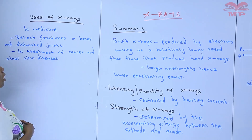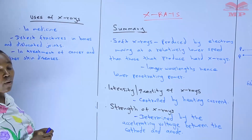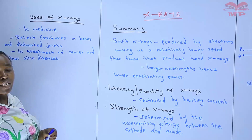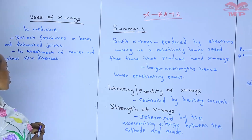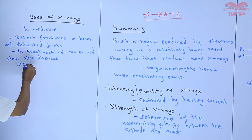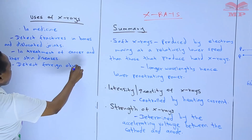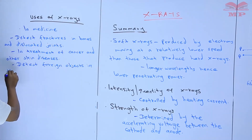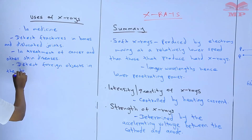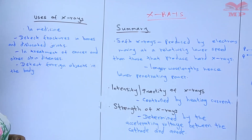When the rays are directed to the affected area, they can be used to destroy those cancerous tissues. X-rays can also be used to detect foreign objects in the body — for example, when one has swallowed a pin, X-rays can penetrate and detect that object.